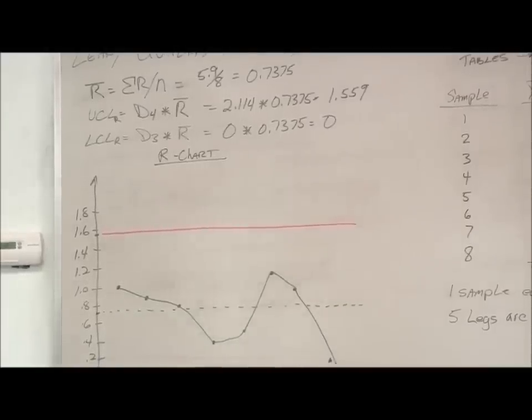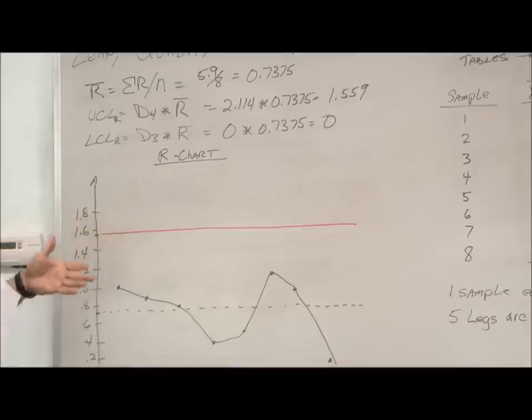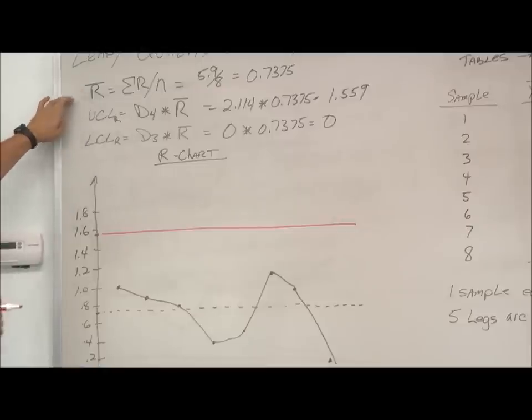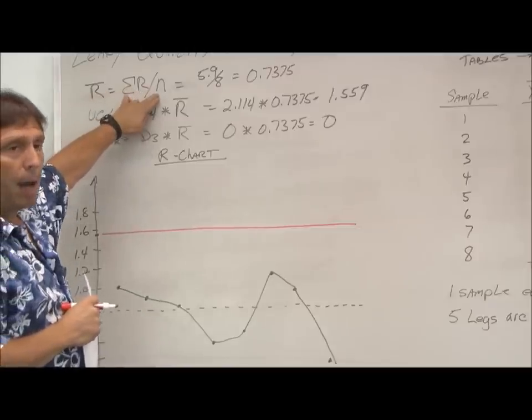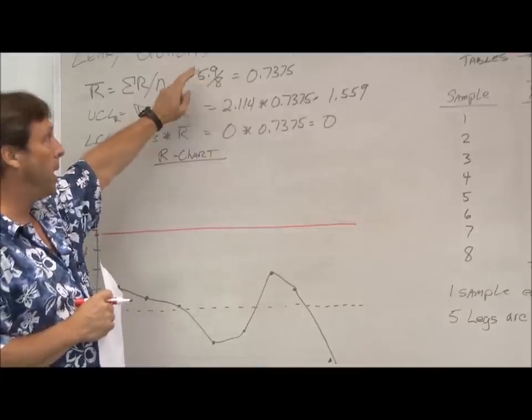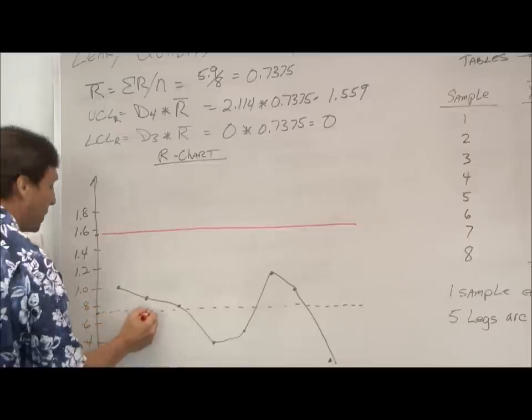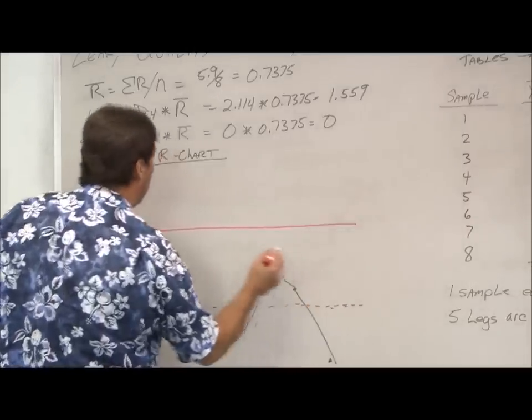So again, for our R bar chart, which is our range chart, our X bar chart is for our means, our R chart is for the range. We take the R bar, or the average of the ranges, which is just the sum of the ranges divided by how many of them there are. In this case, it's 5.9 divided by 8, which gives us our 0.7375, just like we had before. And that's kind of our center line for the R chart.